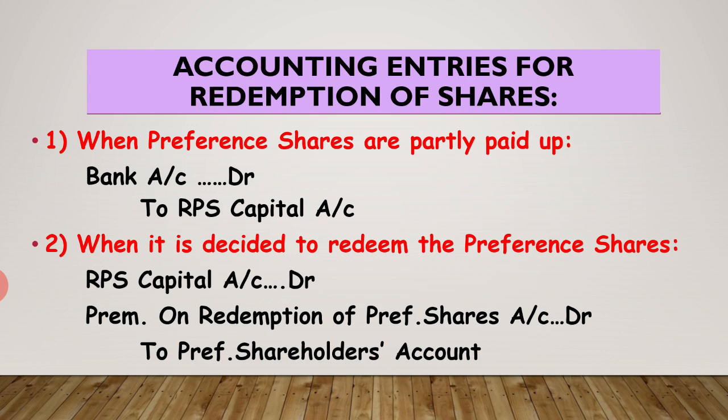When preference shares are partly paid up, then you make the remaining call. Then you write: bank account debit to RPS capital account. If partly paid up shares, then you write this entry. And if your preference shares are fully paid up, then we do not write this entry. When it is decided to redeem the preference shares, RPS capital account debit, premium on redemption of preference share account debit, to preference shareholders account. When you decide preference shares are redeemed, then you pass this entry.